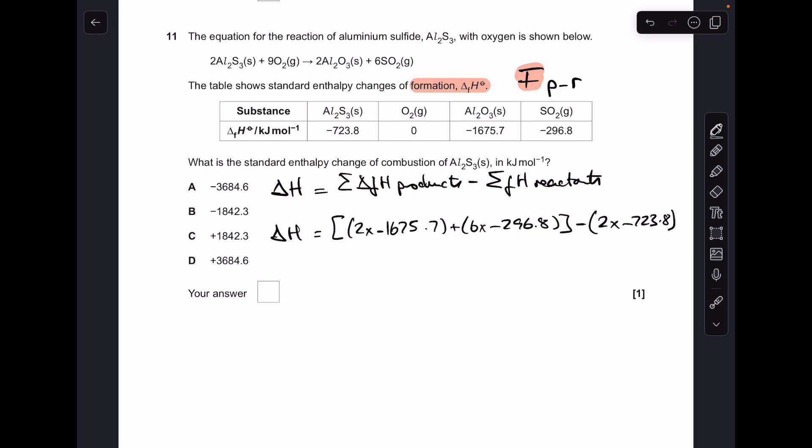So, you put those numbers in, you get that as an answer, and that's an option, but it's not the right answer, because it says, what's the standard enthalpy change of combustion? It's for one mole of aluminium sulphide, not two, so we need to half that, and that gives us B as the answer, so well done if you got that one right, because that is naughty.